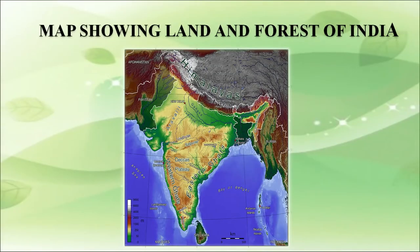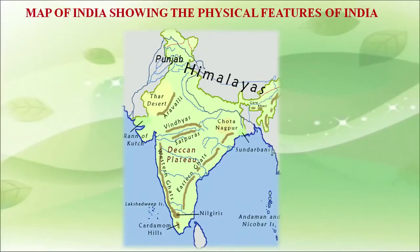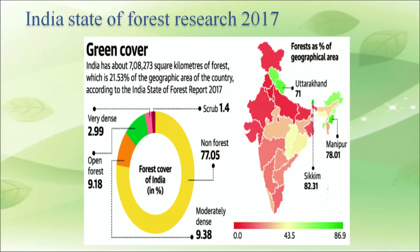The first section of the lesson is to understand the land and forest cover of India. A map related to land and forest cover in India is shown in the next slide. Before we talk about various environmental issues of concern today, let me re-emphasize how large and diverse our country India is. India is one of the 12 mega biodiverse regions of the world. India's land area includes regions of some of the world's highest rainfall to very dry desert, coastline to alpine region, rivers, deltas, and tropical islands. India has about 7,08,273 km² of forest, which is 21.53% of the geographic area of the country according to the India State of Forest Report 2017.